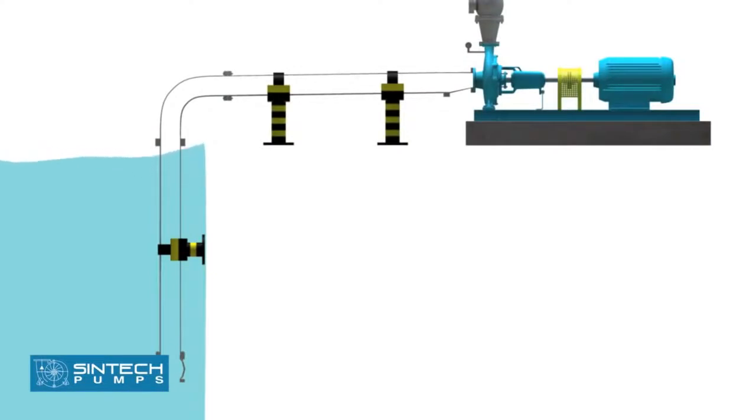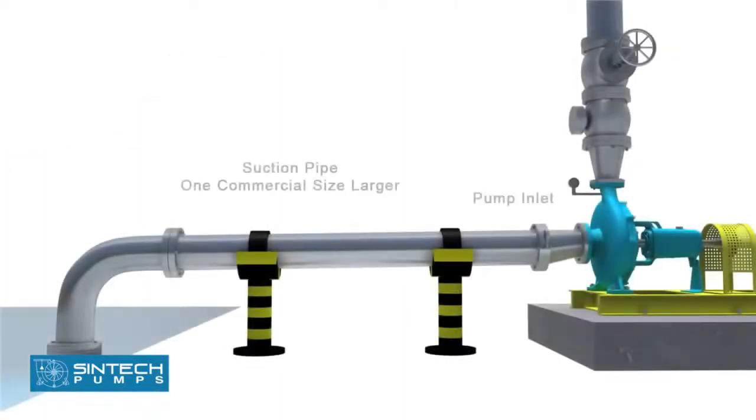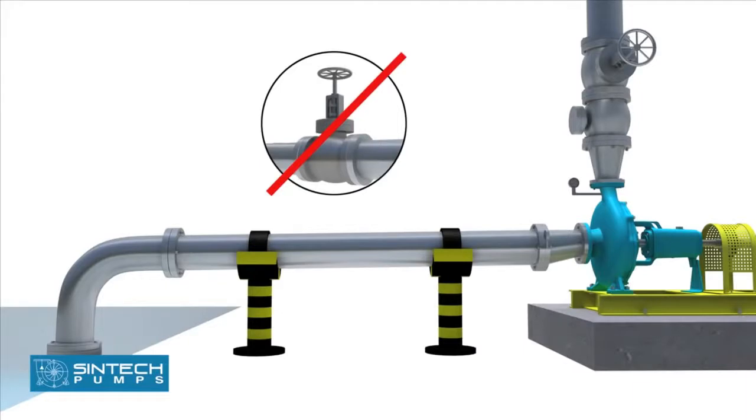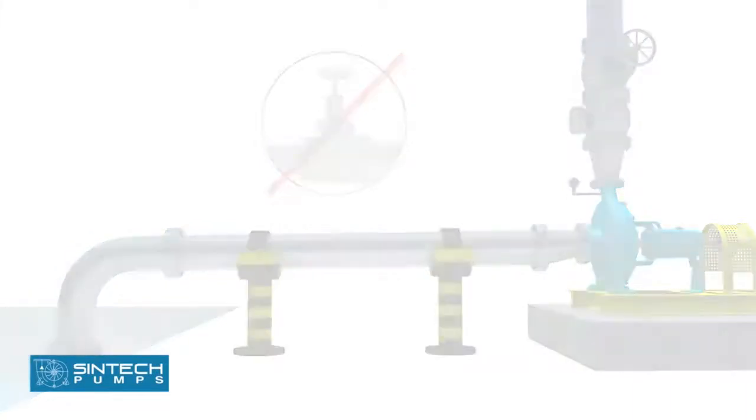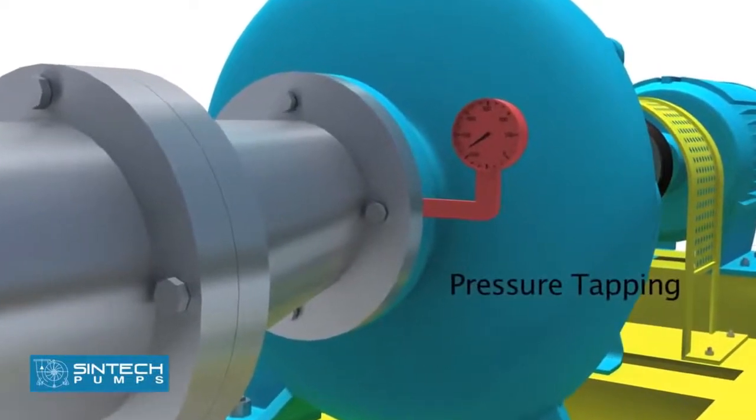The suction pipe should be sized to ensure the liquid velocity of not more than 2 meters per second. The suction pipe size should be at least one commercial size larger than the opening of the pump inlet. All suction pipes should have a continuous rise to the pump suction inlet. 6 millimeter per 100 millimeter slope is recommended. No isolation valve is recommended. There should be a tapping provided for installing a vacuum gauge in suction line.